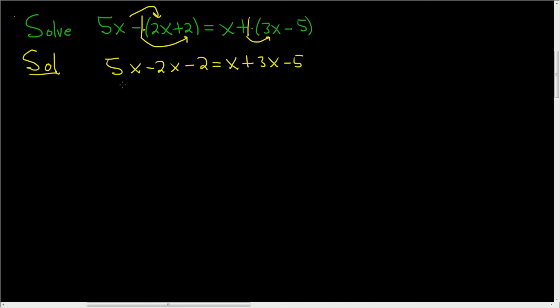Let's go ahead and combine like terms. 5x minus 2x is 3x. We still have the minus 2 and this is equal to, let's see, x plus 3x is 4x and then we still have the minus 5.